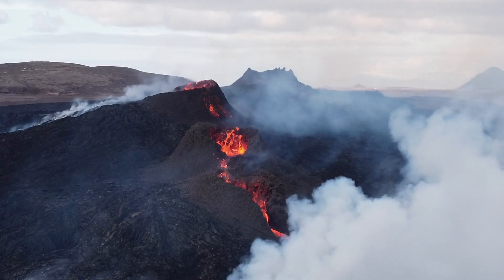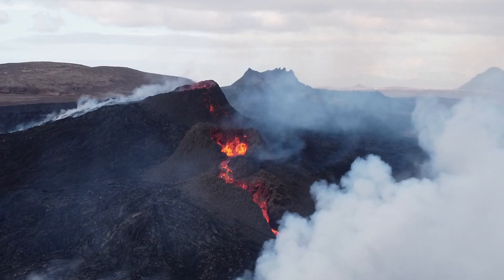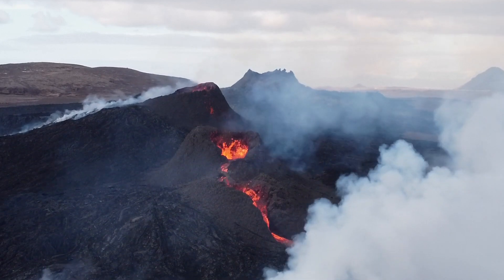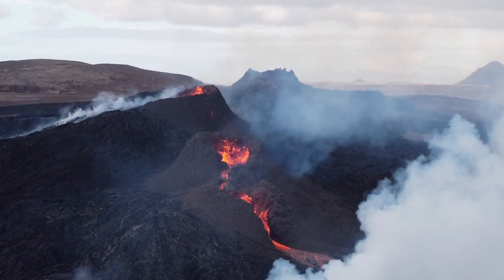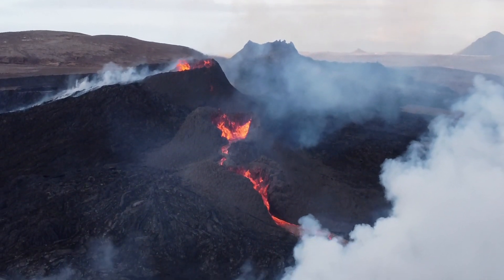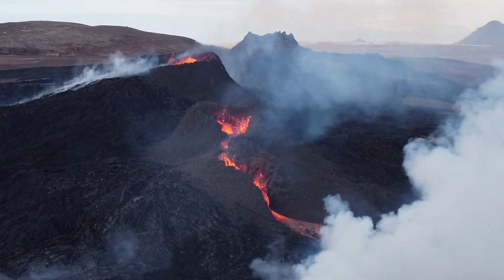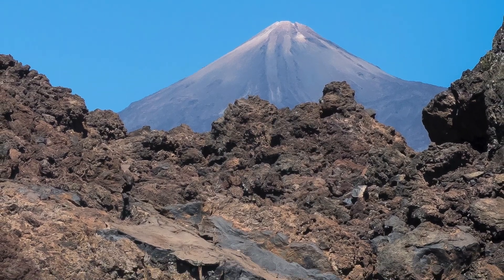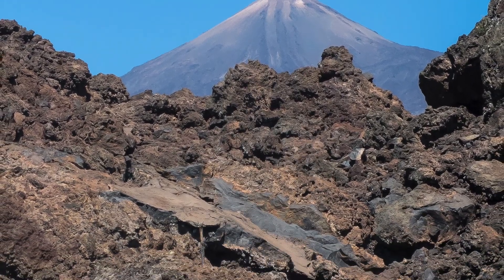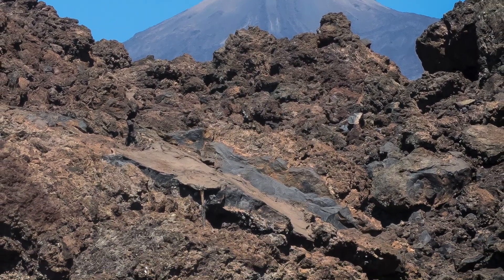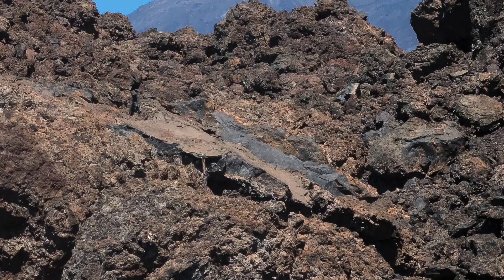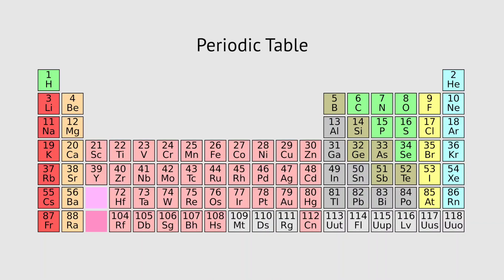The Earth contains an enormous variety of volcanic rocks, all of which crystallised from lava. Not all lavas are the same, and differences in their chemistry can dramatically affect the rocks they form. This is why geologists classify volcanic rocks according to their chemical make-up.